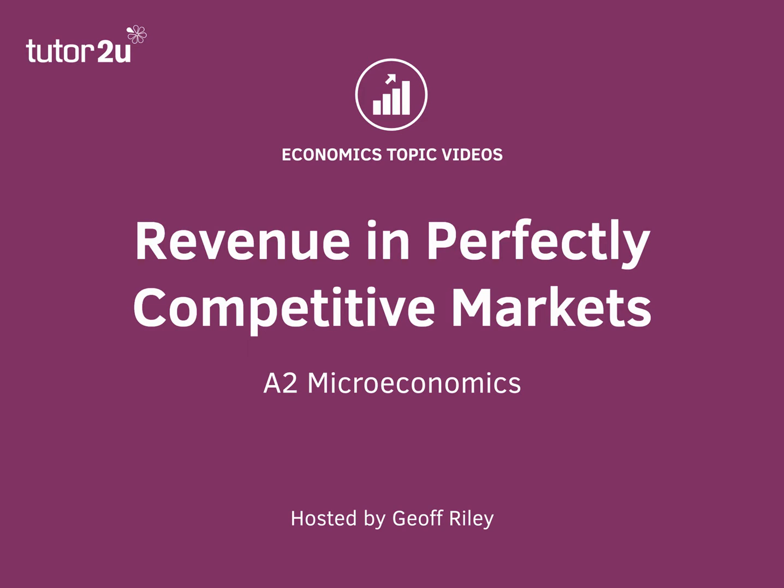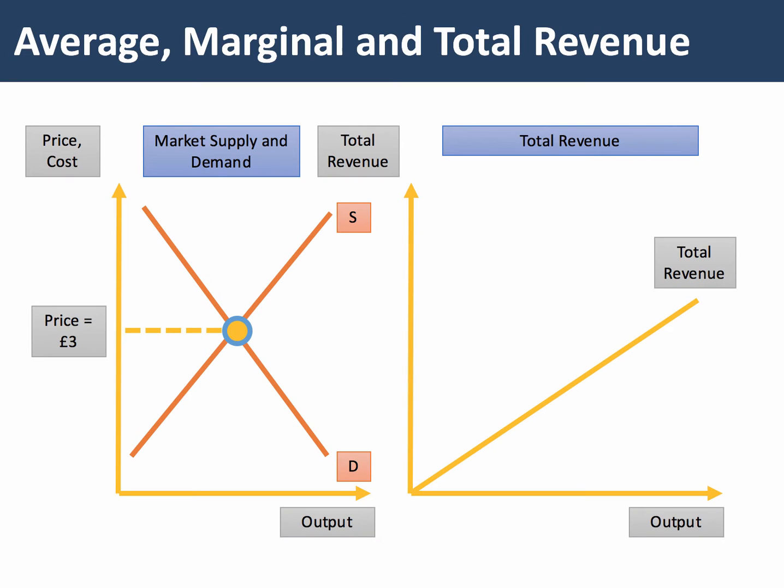In this diagram short, we're going to be looking at the revenue curves for firms in perfectly competitive markets. Perfect competition is a market with many suppliers, none of whom has any control over the market price.